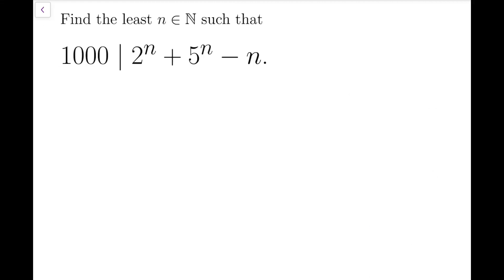The key idea to solve this problem is to consider smaller divisors. We start from the fact that this expression is divisible by 1,000, so the idea is to try to reduce this number — say, a number that divides 1,000. For example, 8 and 125, because 1,000 equals 2 to the 3 times 5 to the 3, which makes this problem special: we are having powers of 2 and powers of 5 together.